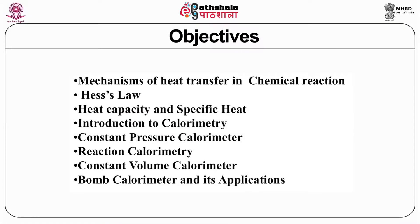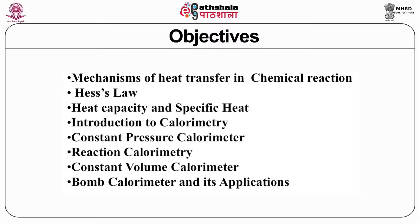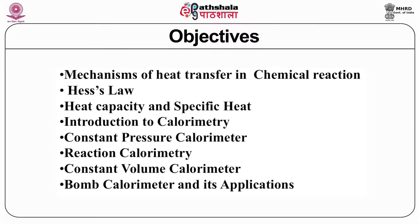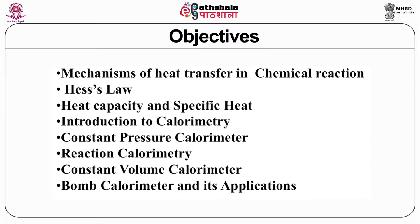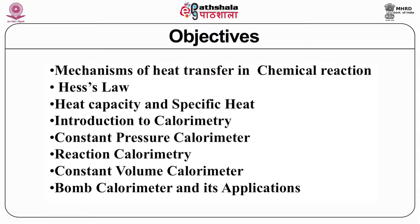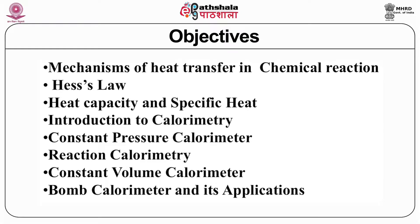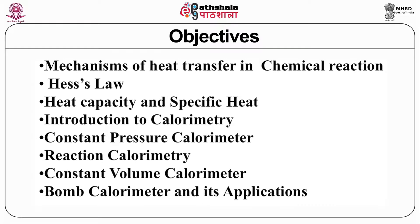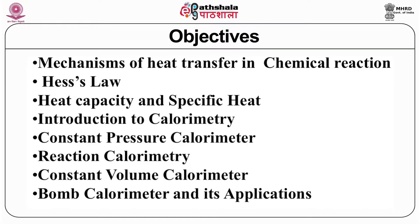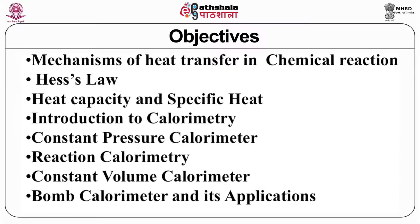Based on this introduction, the objectives of this module are as follows: firstly, we will cover the mechanism of heat transfer in a chemical reaction, then Hess's law, then heat capacity — I will introduce the terms heat capacity and specific heat, which are different. Then an introduction to the calorimetry method, different types of calorimeters — constant pressure calorimeter, reaction calorimeter, constant volume calorimeter, bomb calorimeter — and its applications in biological samples as well as industrial applications.